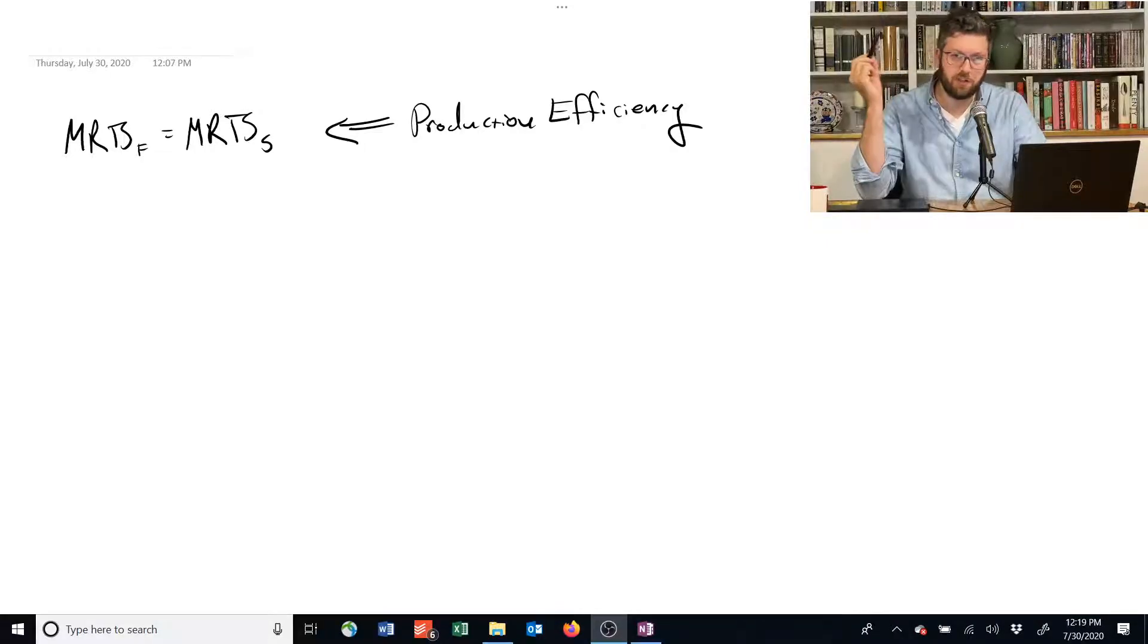So here's another argument for why the marginal rate of technical substitution, that is the slope of the isoquant, is so important for production efficiency. They have to equal each other to be productively efficient. Let's see a simple example of what would happen if they weren't equal.